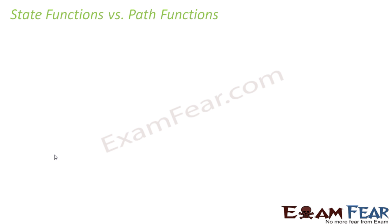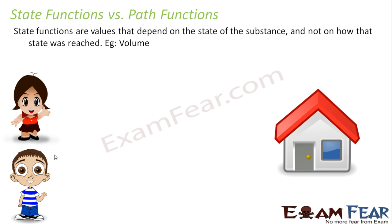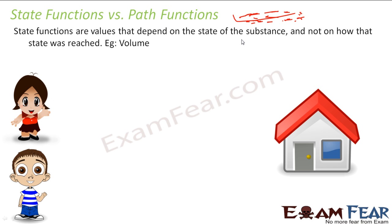Let's define the state function and the path function. State function is something whose value depends only on the state of the substance, not on how it is reached. For example, volume. If you see the river — I'll take a river example — this is my river and it has water. Do I care from where the water has come, whether it has come from tributary 1, tributary 2, tributary 3, or some drainage? I don't care. I just care about the volume of the water that river has.